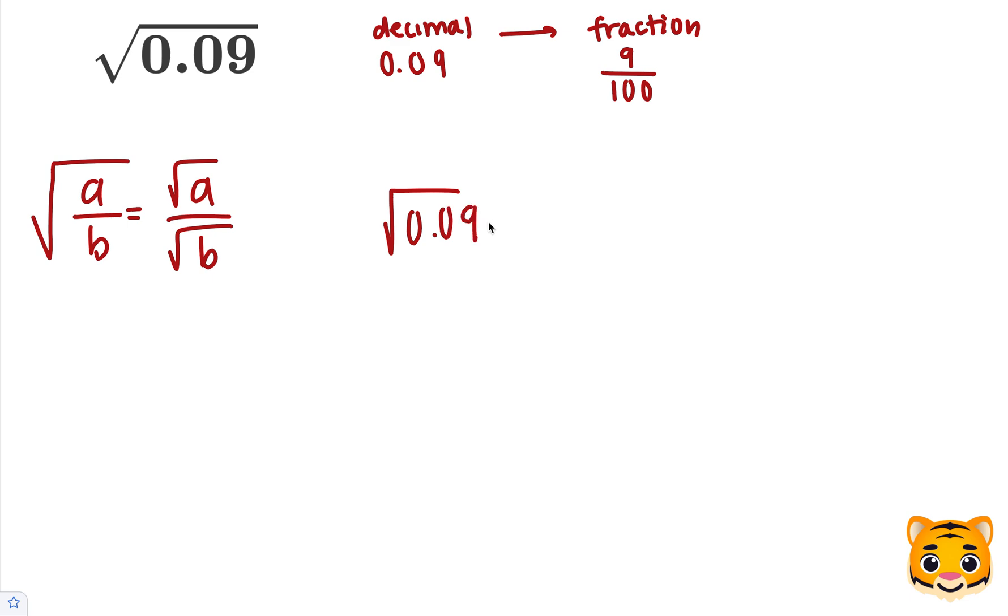The square root of 0.09 is equal to the square root of 9 over 100, because 0.09 is equal to 9 over 100. And now we can rewrite this as the square root of 9 over the square root of 100.